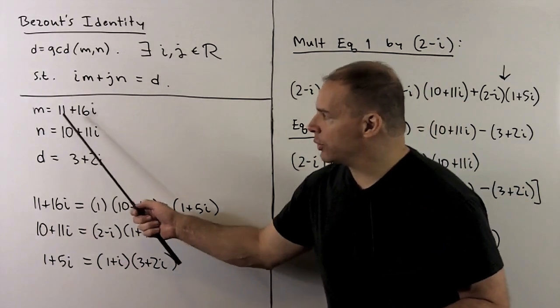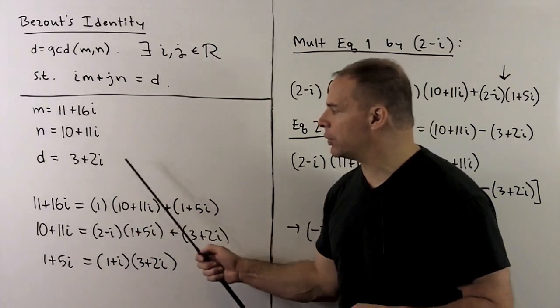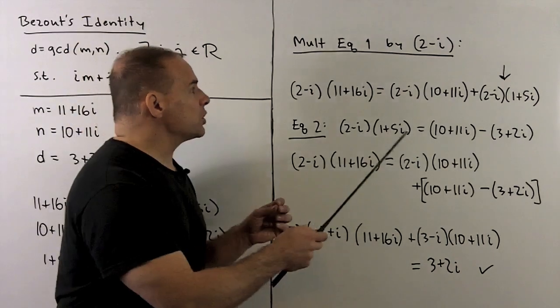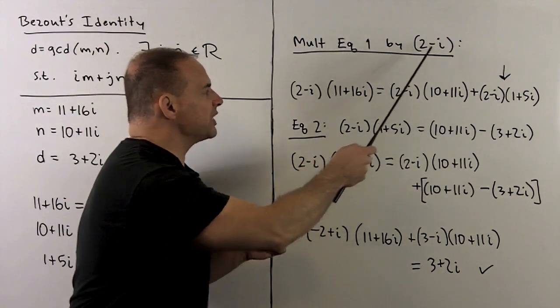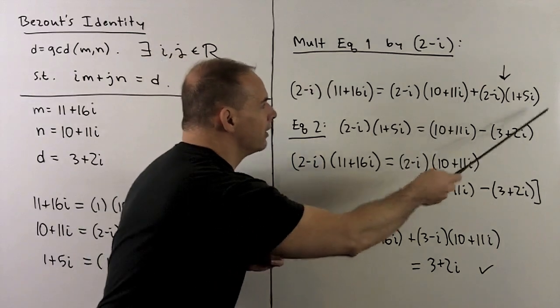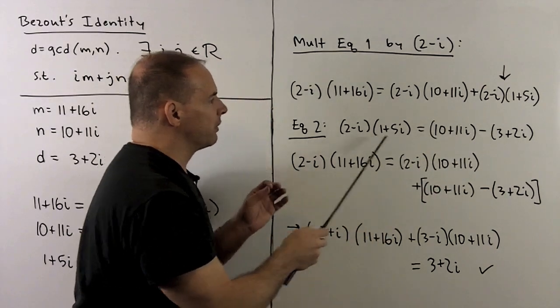So what we need to do is multiply and substitute. We have m equal to 11 plus 16i, n is 10 plus 11i, d is 3 plus 2i. So how do we proceed? First, we'll multiply equation 1 by 2 minus i. So what this lets us do is substitute out the last item using equation 2. We push everything to the other side.